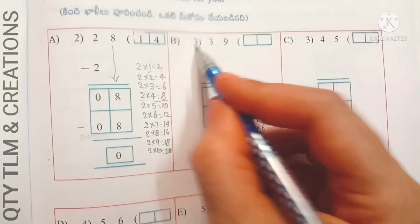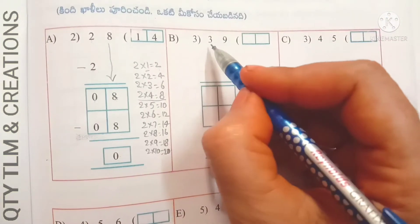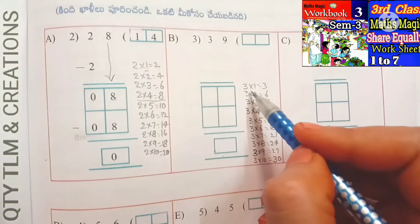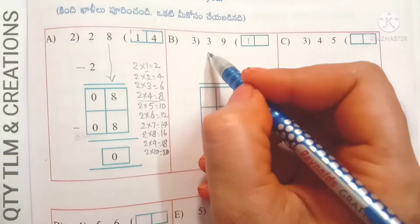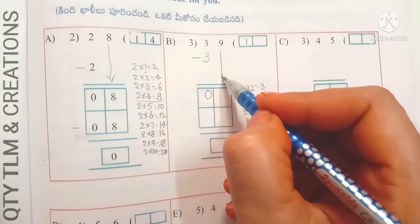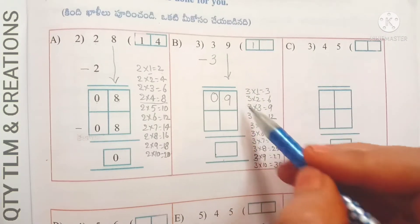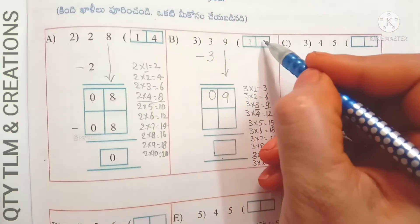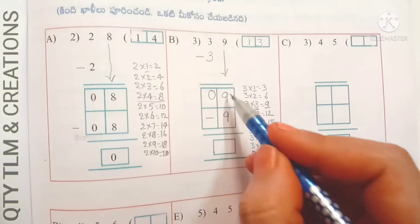Next B: 39 divided by 3. Division starts from the highest place value, which is 3. Observe the 3 times table — 3 ones are 3. Write 1 in the quotient's place and 3 under 3, subtract: we get 0. Bring down 9. 3 threes are 9, so write 3 in the ones place. Write 9 under 9 and subtract: we get 0.